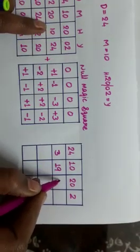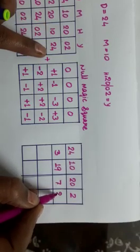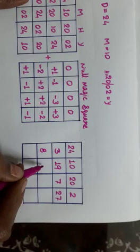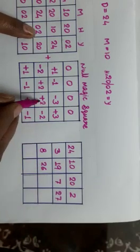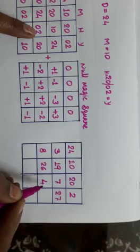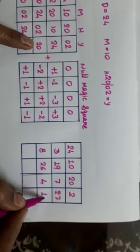10 minus 3, 7. 24 plus 3, 27. And 10 minus 2, 8. 24 plus 2, 26. 2 plus 2, 4. And 20 minus 2, 18.